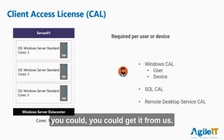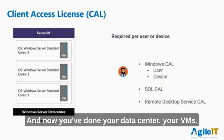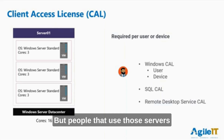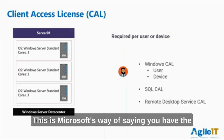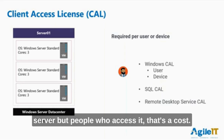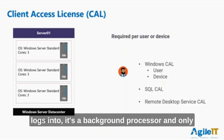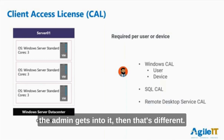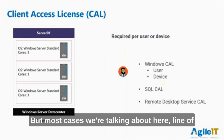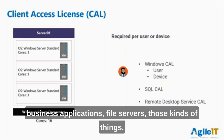So you could get it from us, and now you've done your data center and your VMs. But people that use those servers need a client access license. This is Microsoft's way of saying: you have the server, but people who access it — that's a cost. They're always paired together, unless it's some VM that nobody logs into, just a background processor where only the admin gets in. But in most cases — line of business applications, file servers, those kinds of things — they need a Windows CAL.